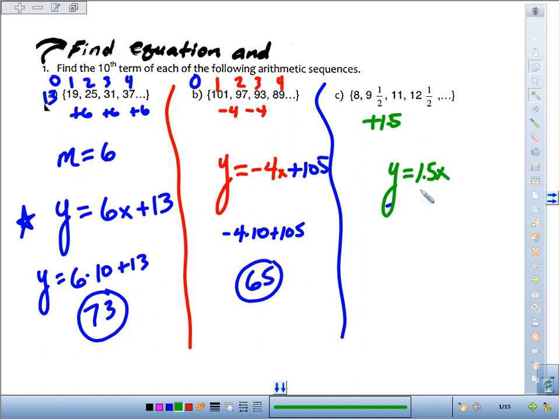We have to figure out the y-intercept. Our first term's 8. Second term's 9 1/2. Third term, fourth term. If you took 1.5 times 1, you only get 1.5. What do you have to add to get to 8? Well, you have to add 6.5.